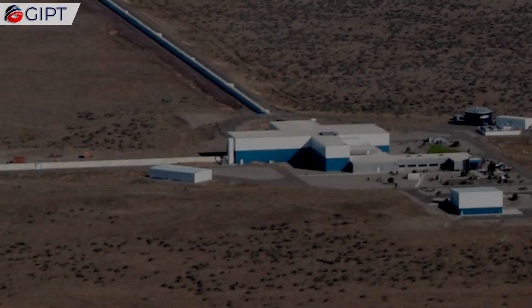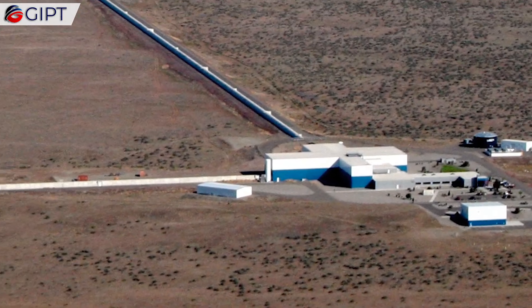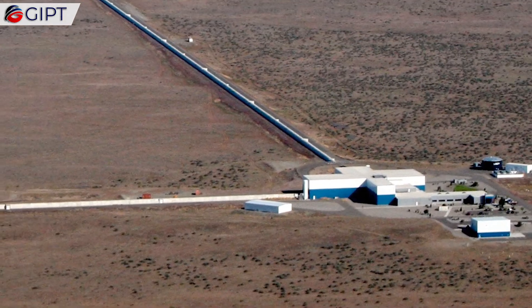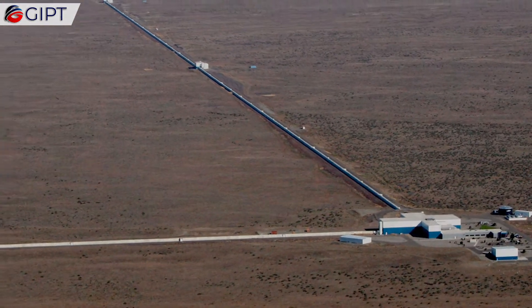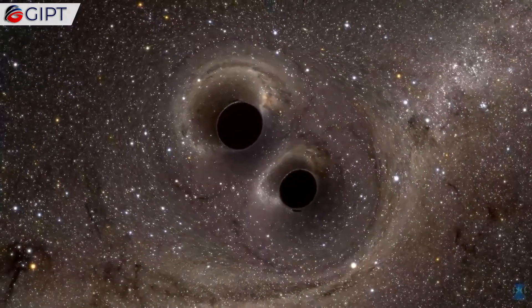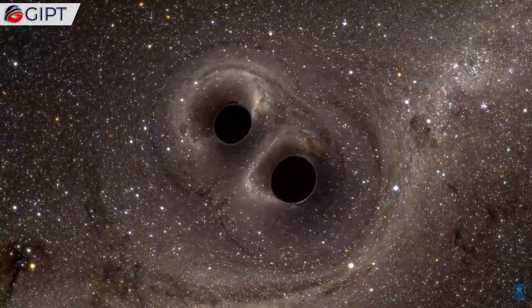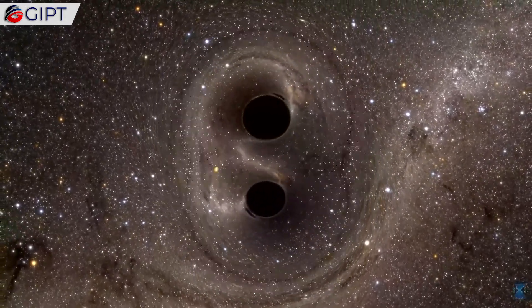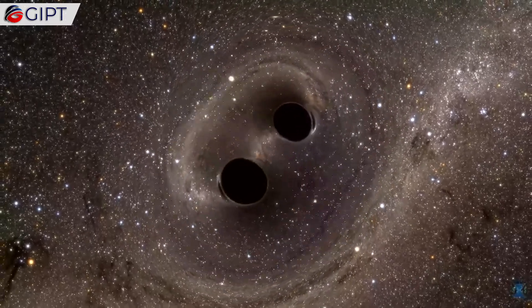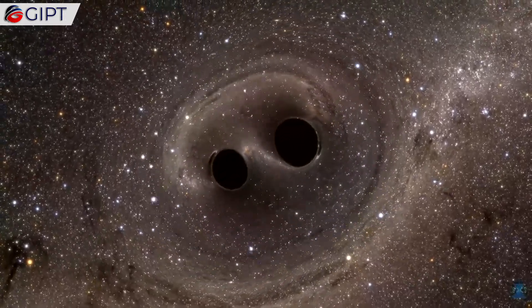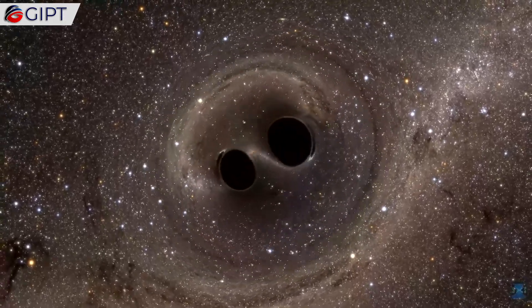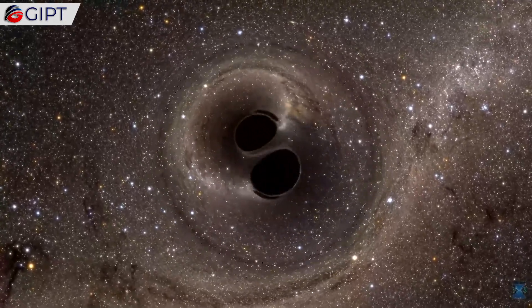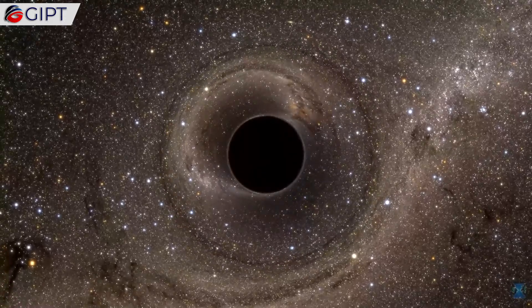On February 11, 2016, the LIGO collaboration announced the first observation of gravitational waves from a signal detected on September 14, 2015. The waves originated from the violent event of two massive black holes merging 1.3 billion light-years away. This observation practically confirmed Einstein's theory on gravitational waves, which he published way back in 1916 as a consequence of his theory of relativity. This just shows the kind of genius Einstein really was.